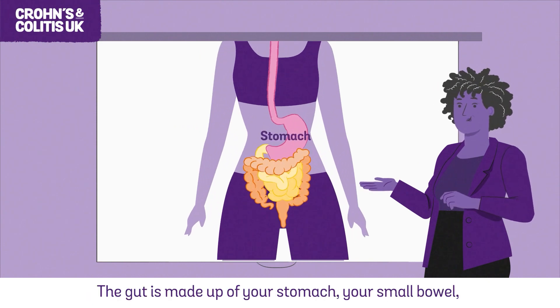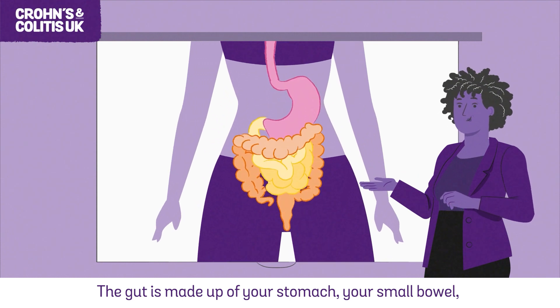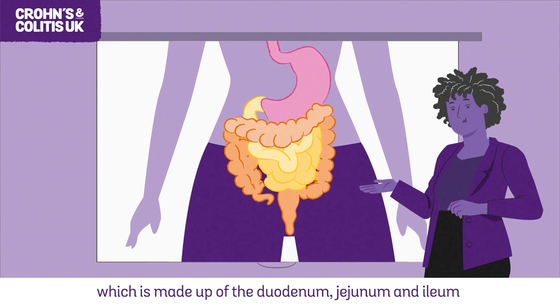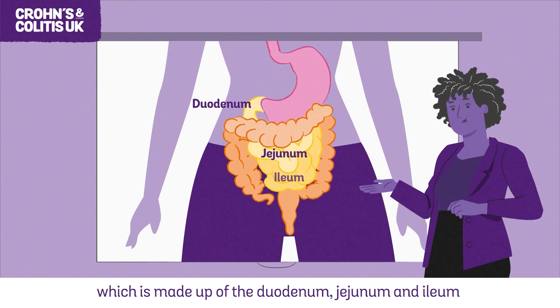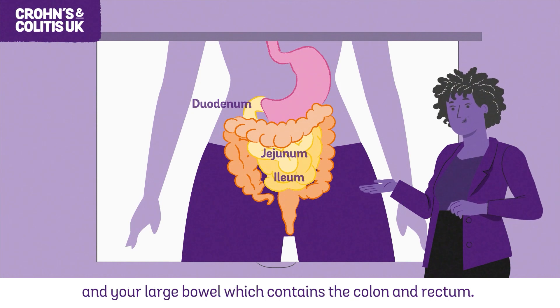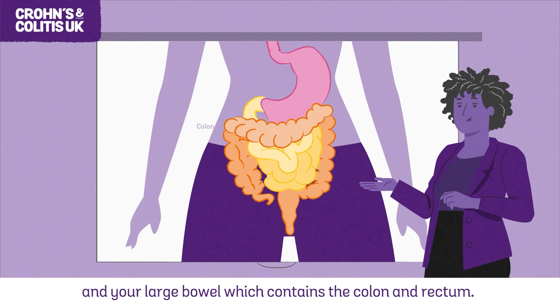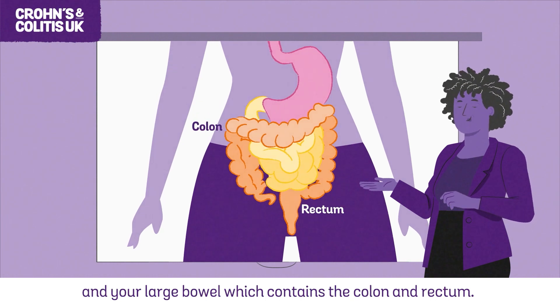The gut is made up of your stomach, your small bowel — which is made up of the duodenum, jejunum and ileum — and your large bowel, which contains the colon and rectum.